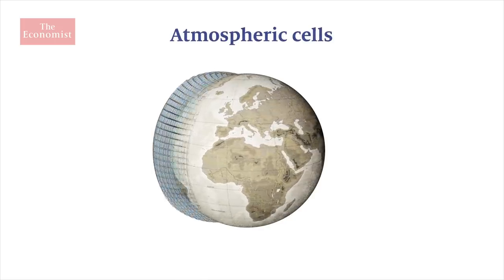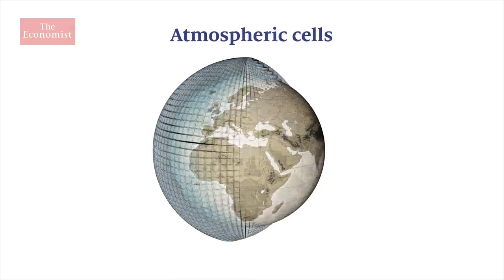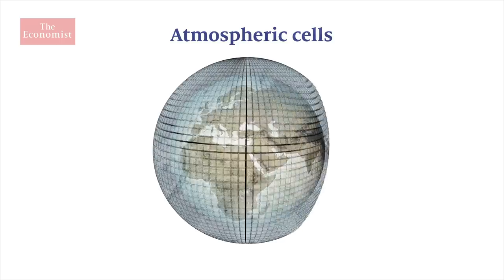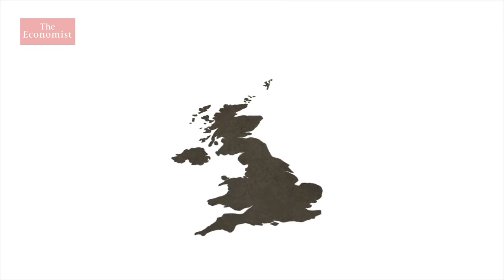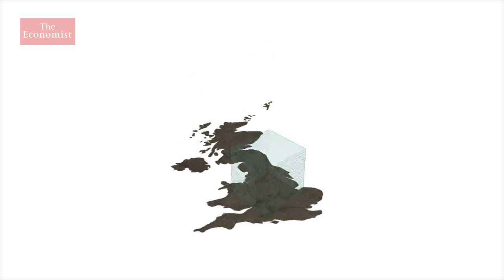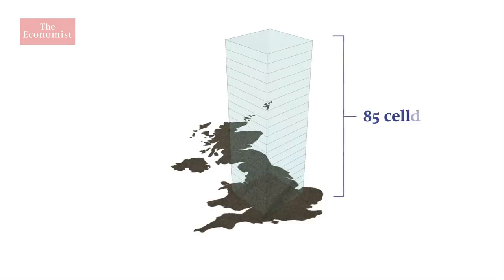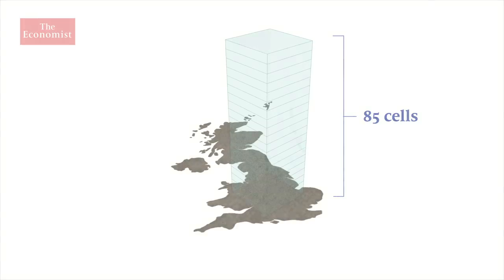Scientists divide the Earth's atmosphere into a grid of hundreds of thousands of cells in stacks like a skyscraper. The model used by the Met Office, Britain's National Weather Service for example, uses stacks which are 85 cells high.